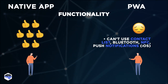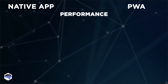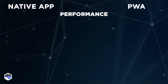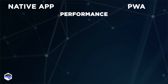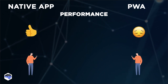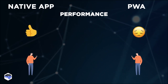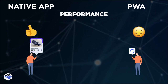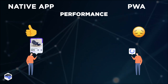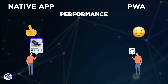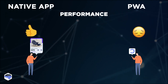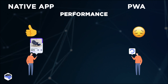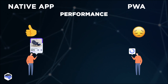Another sore point is performance. It all depends on the quality of development, but in any case, native apps are built according to the technical requirements of the platform, using appropriate programming languages and APIs. This guarantees more usability, a smooth UX/UI, and most importantly, more variety in functionality.